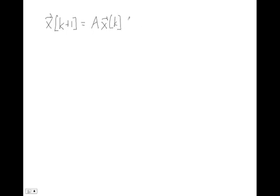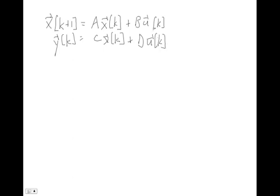Plus some B matrix times u at sample k. And then we're going to be looking at y at sample k is some linear combination of our states at sample k plus our inputs at sample k. So this is the discrete time system or discrete system.